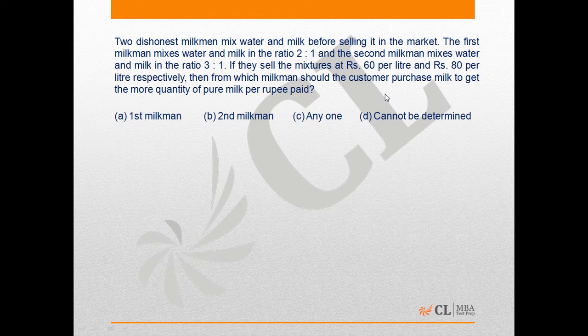This problem is based on the concept of mixture and alligation. Here we have two dishonest milkmen who mix milk and water before selling them. The first milkman mixes water and milk in the ratio 2 is to 1, which means the percentage of milk in this mixture...